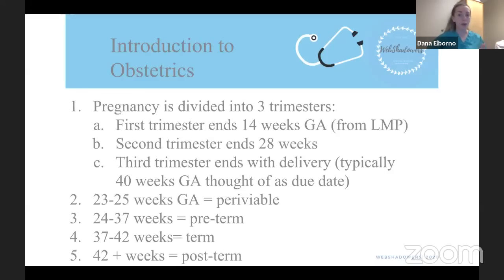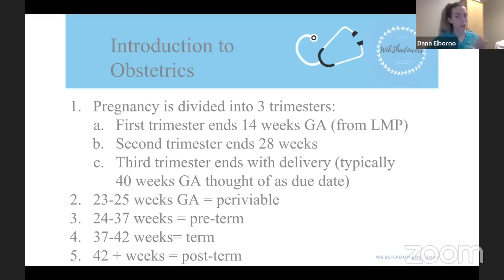From 24 to 37 weeks is considered preterm, at which point the fetus may incur implications of prematurity such as difficulty breathing or GI issues. From 37 to 42 weeks is considered term, and 42 weeks and beyond is considered post-term.